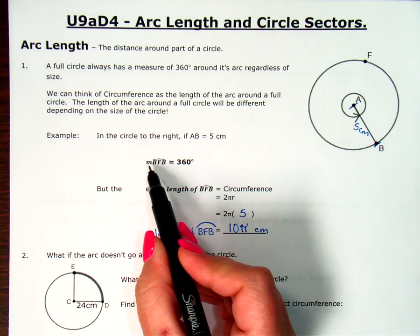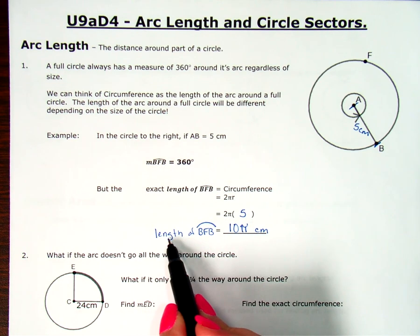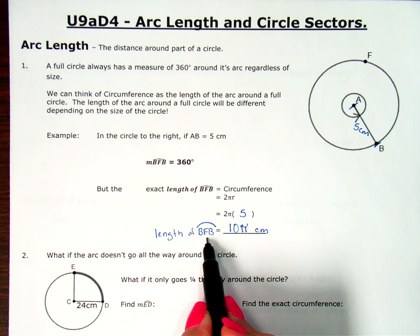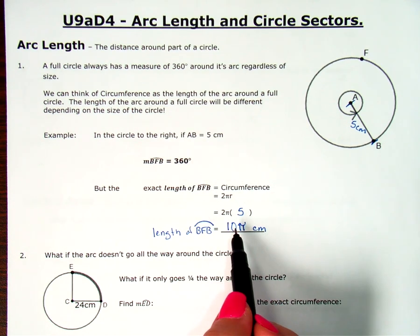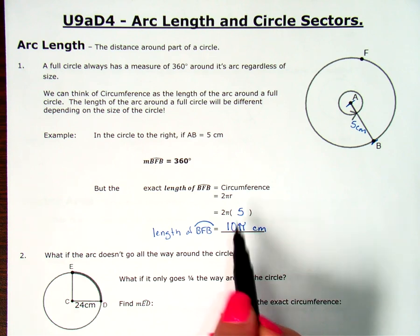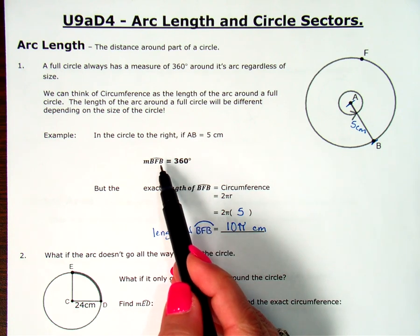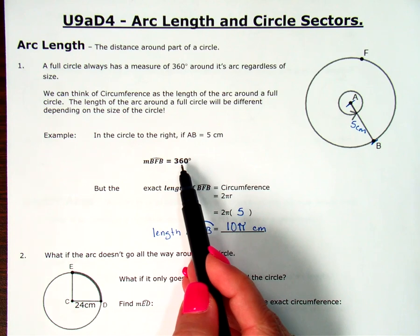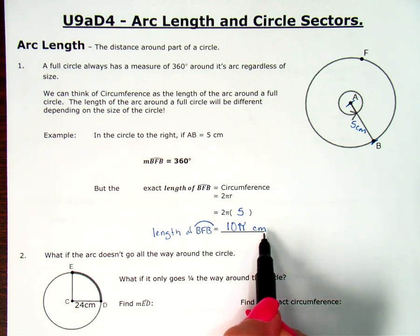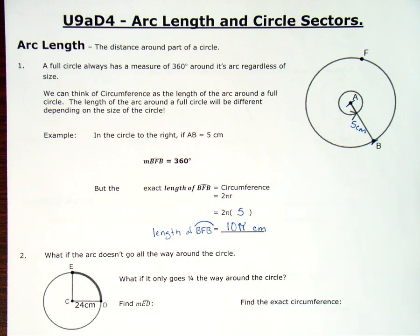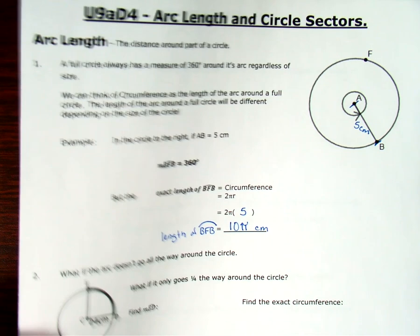So you have the measure of arc BFB and you have the length of arc BFB — and those are two different things. I have 360 degrees, and I have 10π centimeters. You always have to pay attention: are we looking at measures, which means degrees? Or are we looking at length, which means a unit of length — centimeters, meters, or inches?